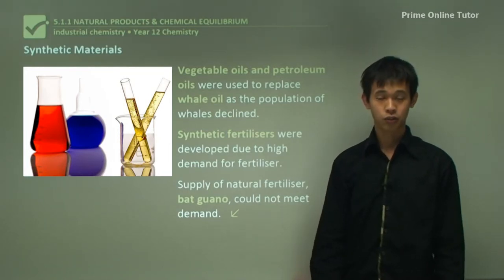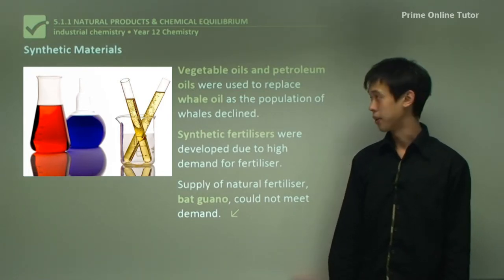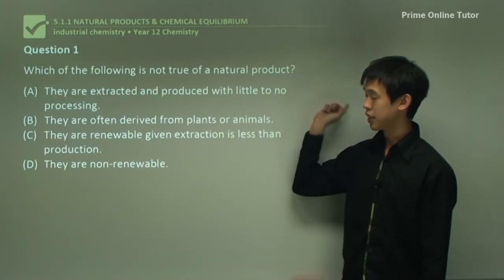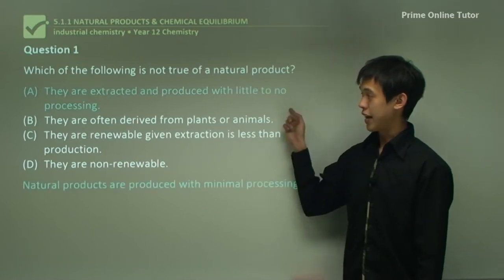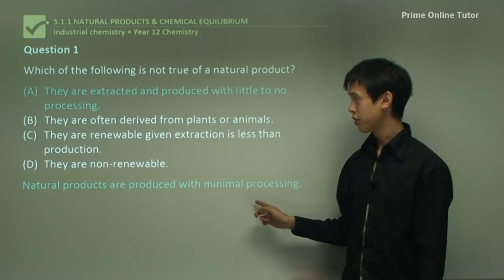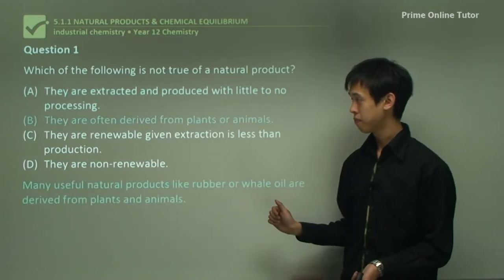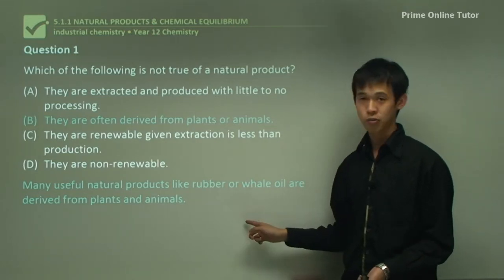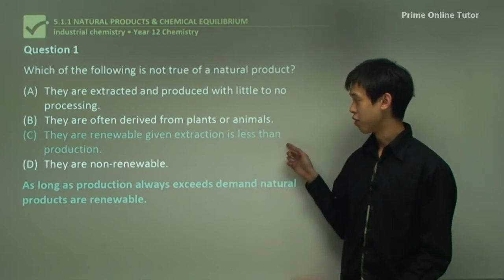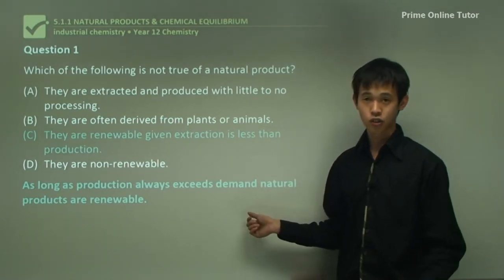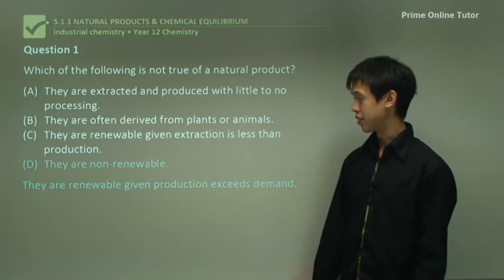Now for the question segment. Question 1: Which of the following is NOT true of a natural product? Option A - they are extracted and produced with little to no processing - this is true, so not the right answer. Option B - they are derived often from plants and animals - also true, such as rubber and whale oil, so not the correct answer. Option C - they are renewable given extraction is less than production - again true, so not the right answer. Therefore D must be correct.